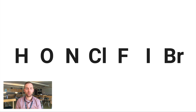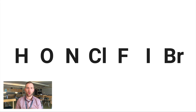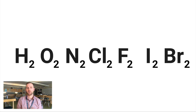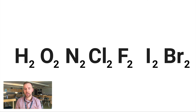There are seven elements that do this: hydrogen, oxygen, nitrogen, chlorine, fluorine, iodine, and bromine. And if you're ever writing these as part of a chemical equation, you wouldn't write them just as their element symbol — you'd have to put a little subscript 2 after it, which implies that there are two atoms bonded together for each of these elements.